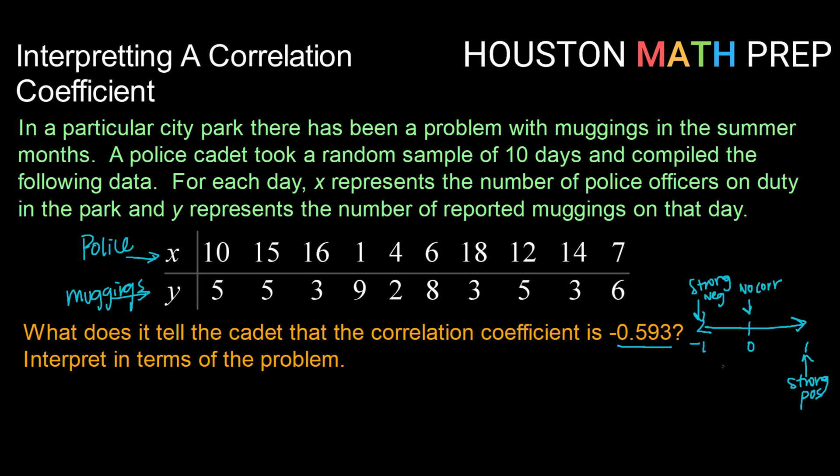And then we, of course, have shades of gray in the middle, right? So a negative 0.593 is kind of in the middle of the negative spectrum. So that means we would call this a moderate negative linear relationship.